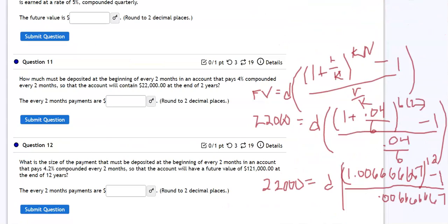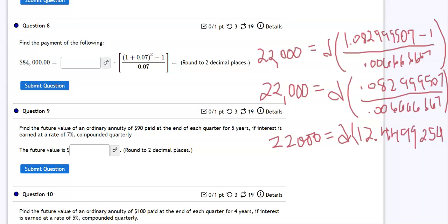Let's finish this division here and I'm going to get 12.4499254, and now lastly I want to take this number that's with D and divide it out on both sides and then I should have my deposit amount.